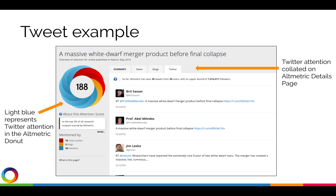If you follow this tip and link directly to the research, the research you share on Twitter and ensuing conversations should be captured by Altmetric in the Altmetric Details page under the corresponding source tab — in this case, the Twitter tab. In the Altmetric donut, light blue represents Twitter attention.